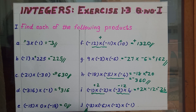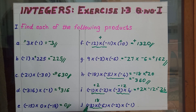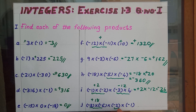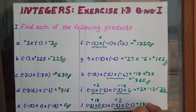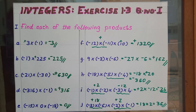Then next one: minus 3 into minus 6 into minus 2 into minus 1. Combining the first two: 18, and minus into minus gives plus. Combining minus 2 into minus 1 gives 2, minus into minus gives plus. So equal to 18 into 2, which is 36. Positive 36 is our answer.